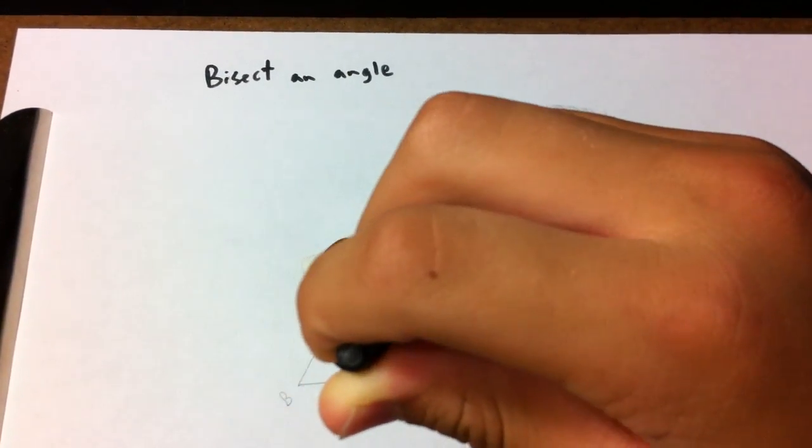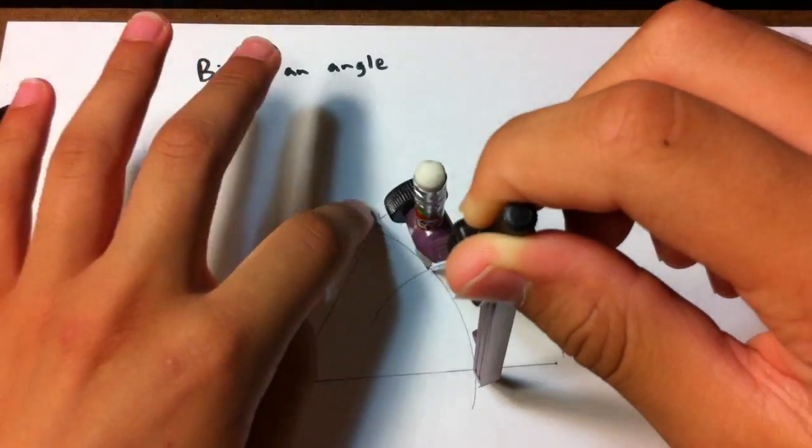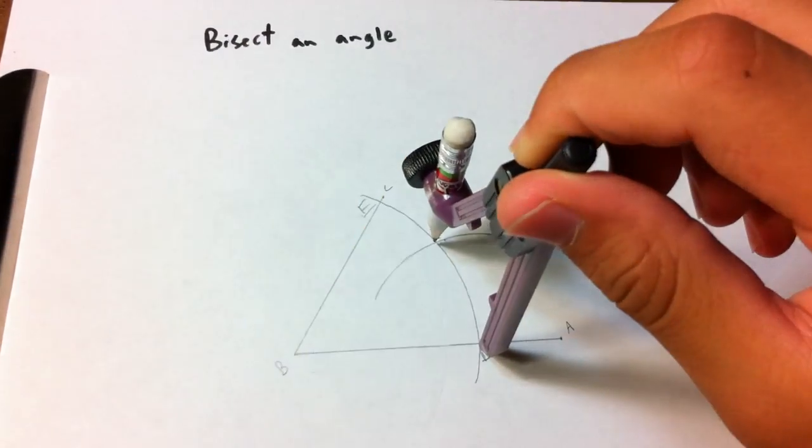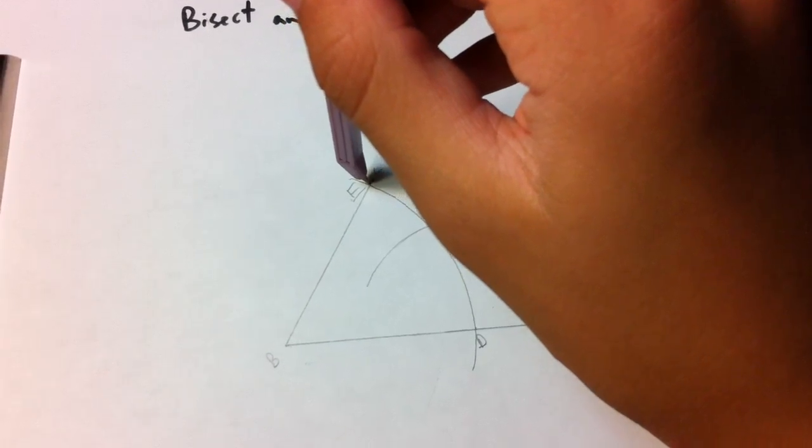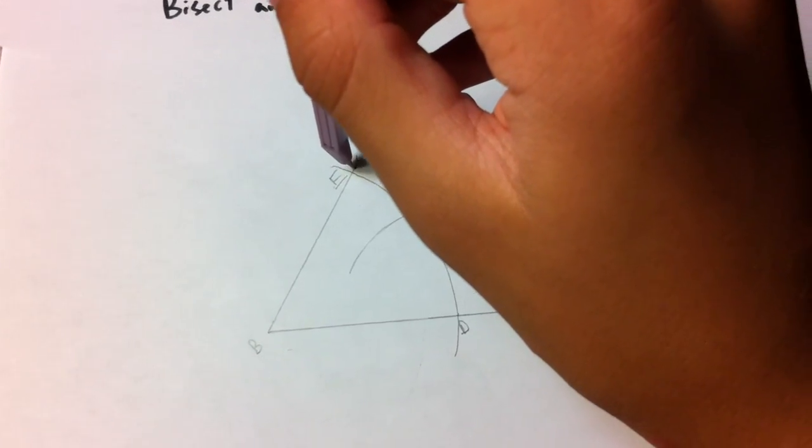And then you do the same thing with same compass setting, so with E. I'm having trouble with point E. And you just draw an arc.